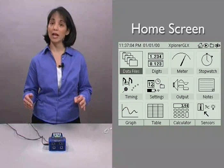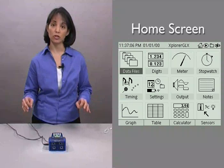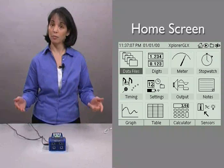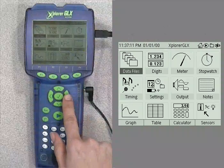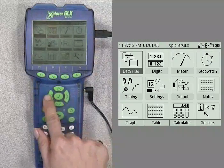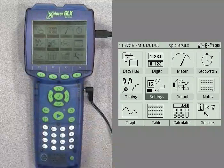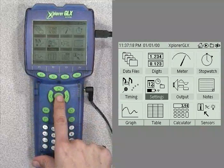From this screen, you can access any of the 12 GLX screens represented by these 12 icons. To move through the icons, push the arrow keys. To open up one of the screens, push the check mark after you've selected it.